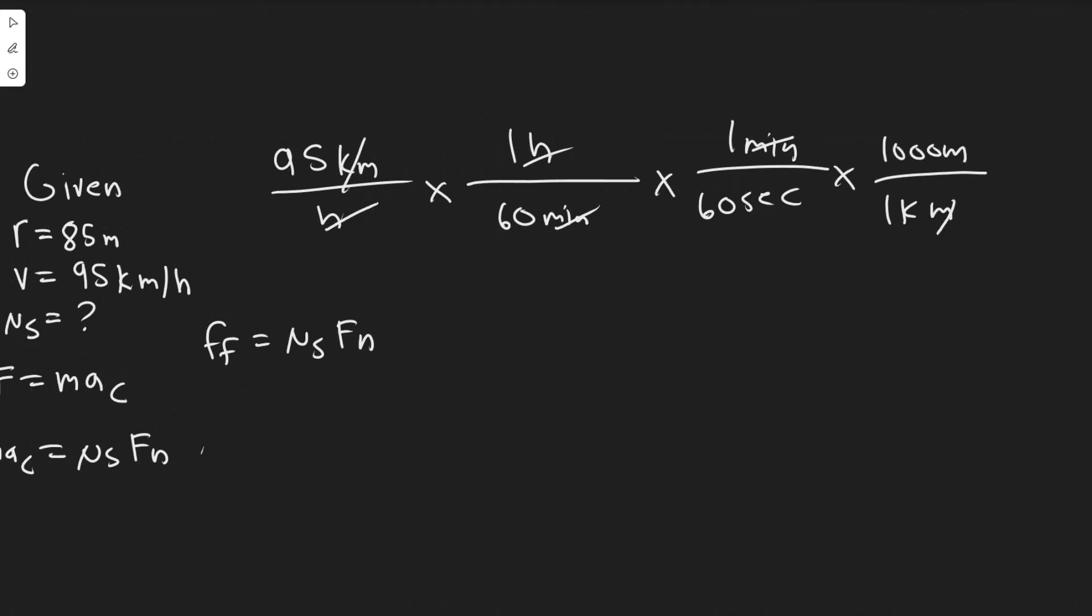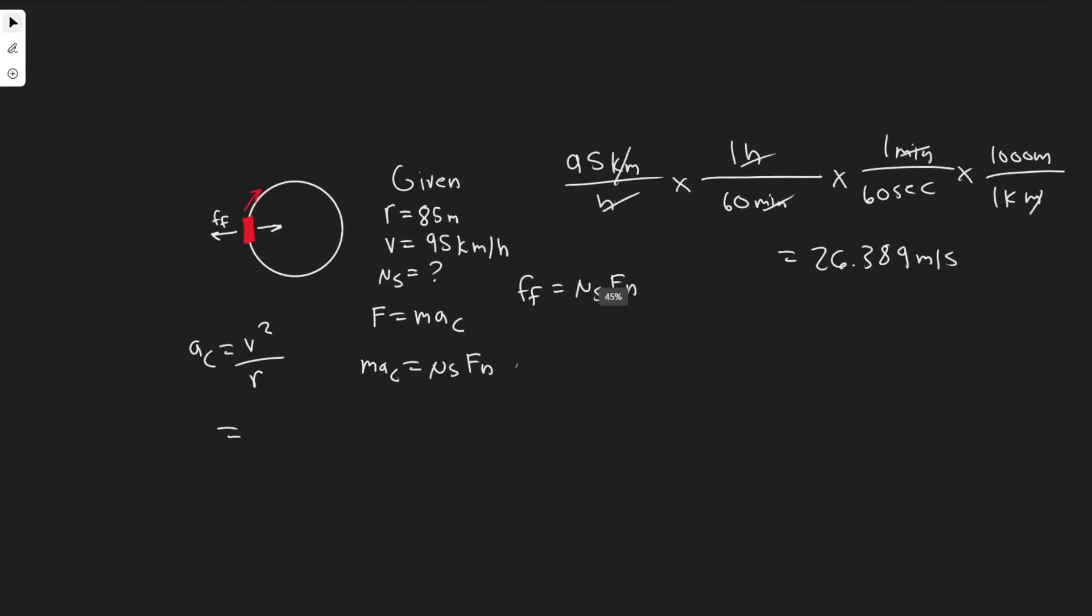These cancel and we have meters per second now. Let me convert this: 95 divided by 60 divided by 60 times 1000 equals 26.389 meters per second. So now we've got the correct velocity.